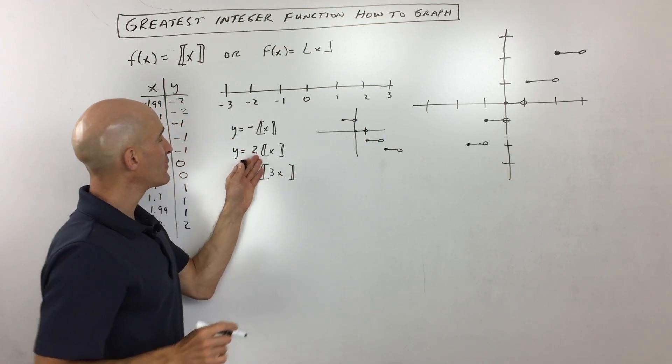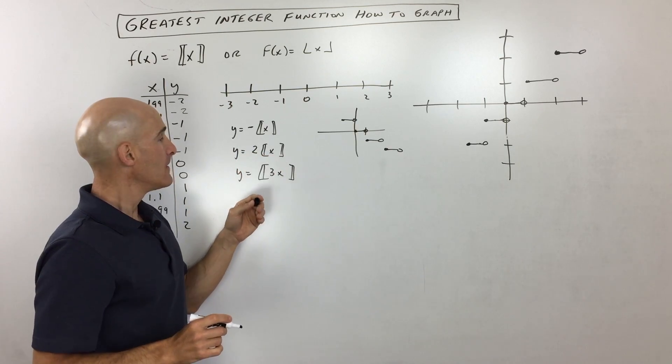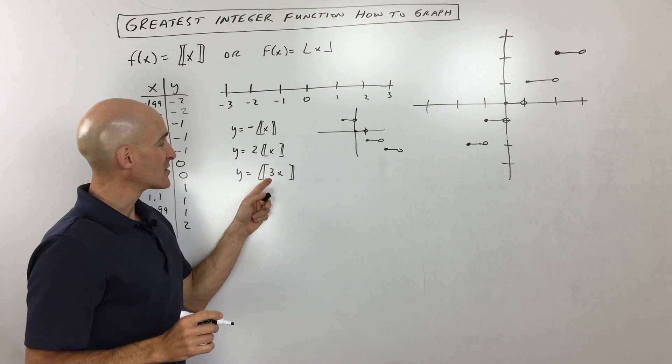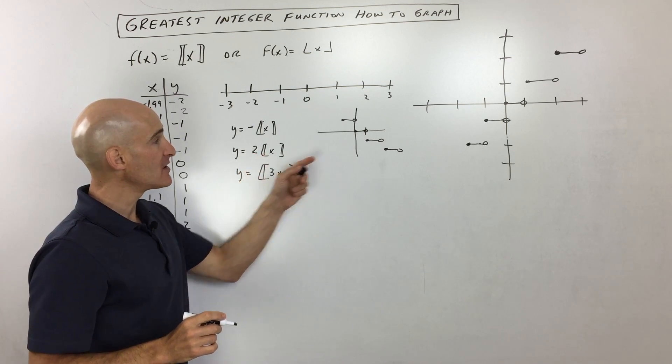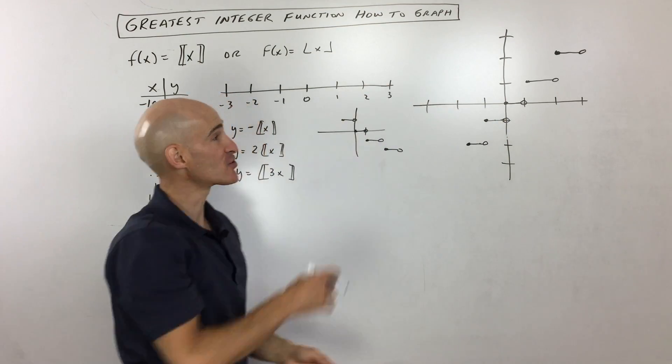Now what do you think for this next one, y equals 2 times the greatest integer of x? What do you think this 2 does to the graph? Well, what's interesting, if you're comparing this one and this one, this 2 is outside. It's in front of. What this is going to do is it's going to multiply all these values over here times 2. So it's going to be a vertical stretch.